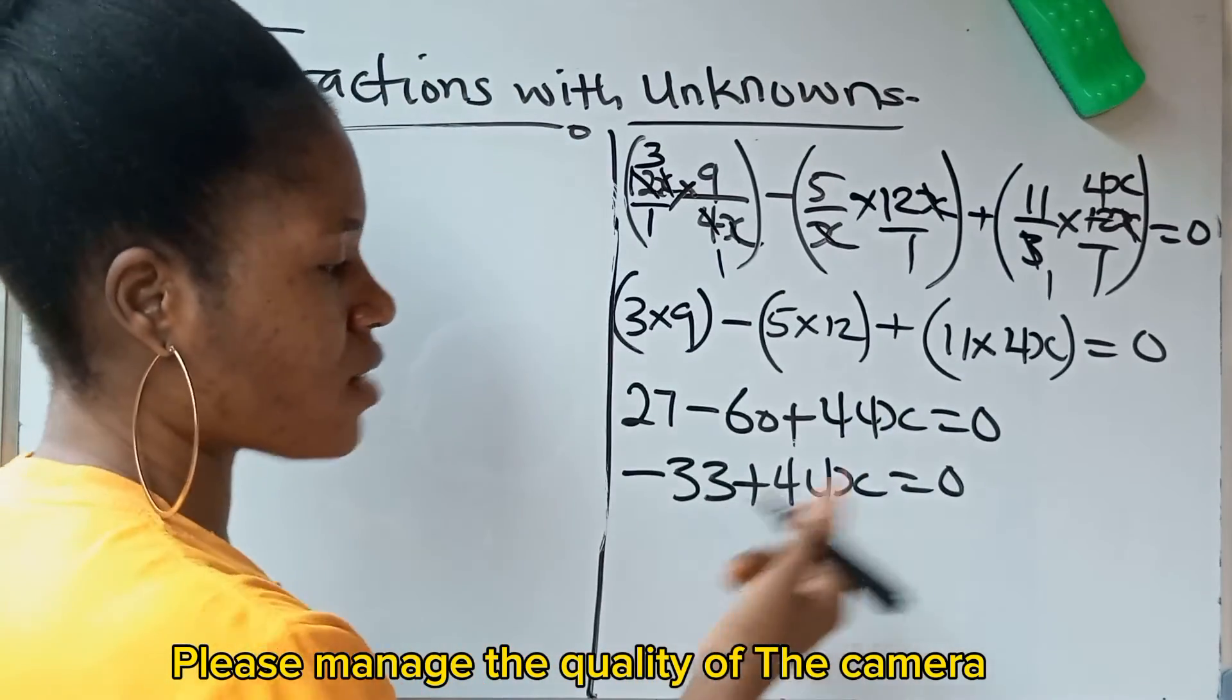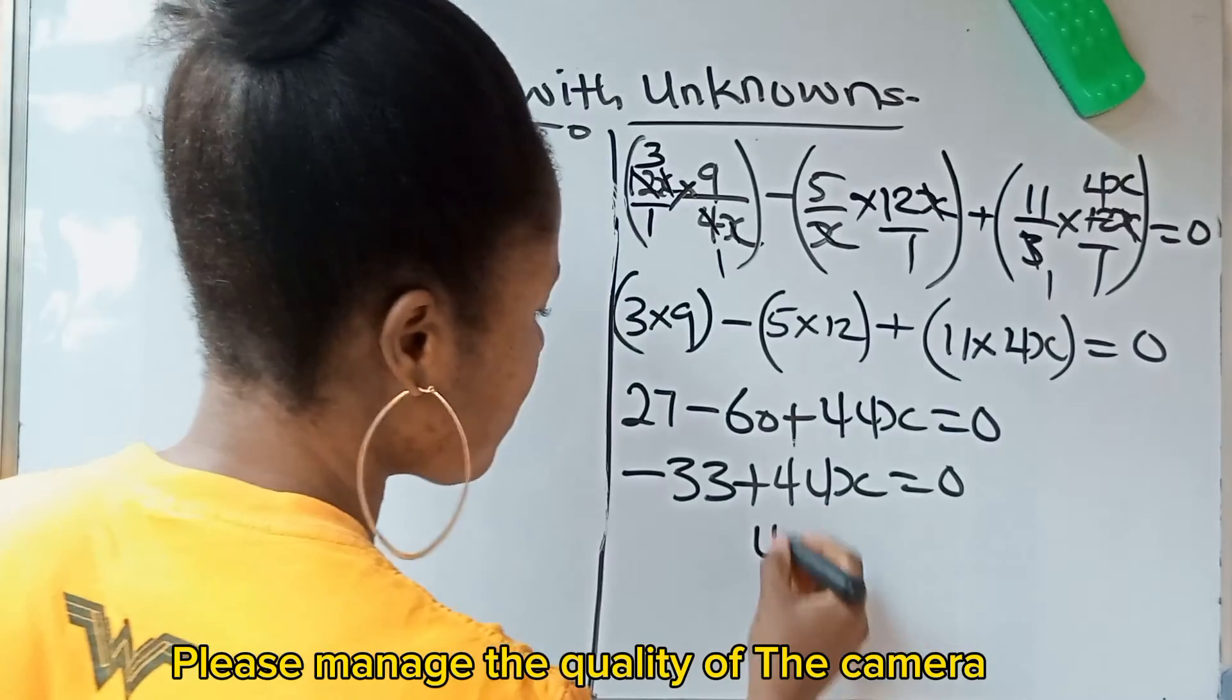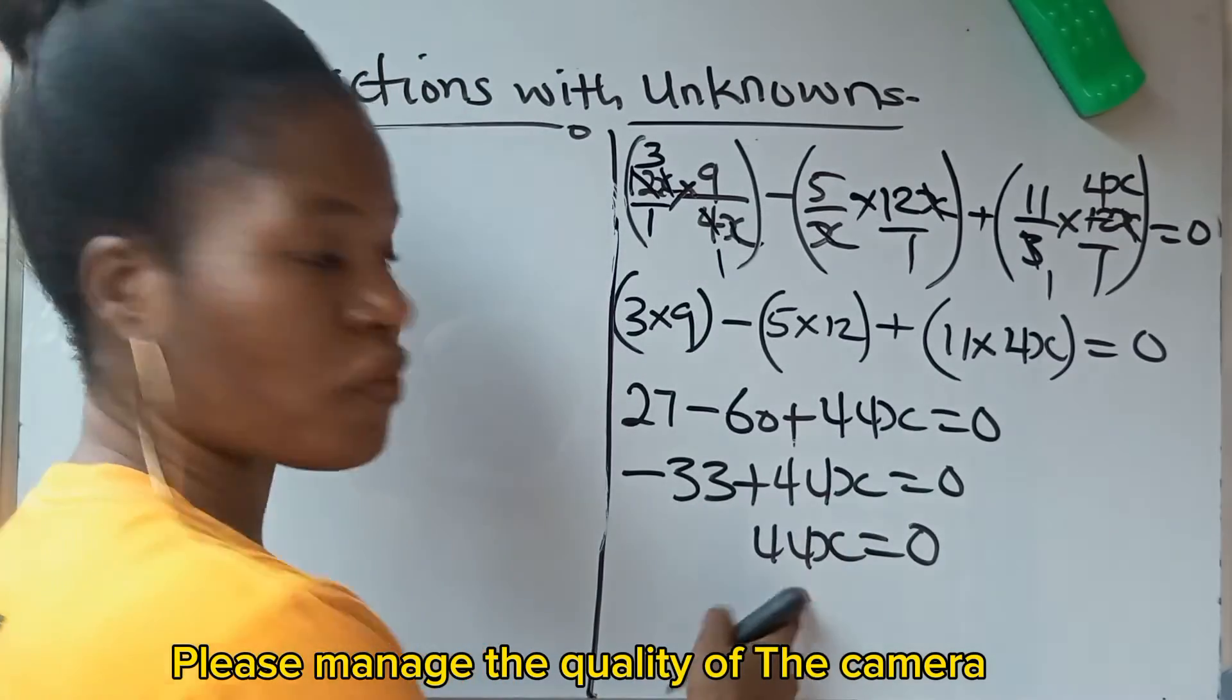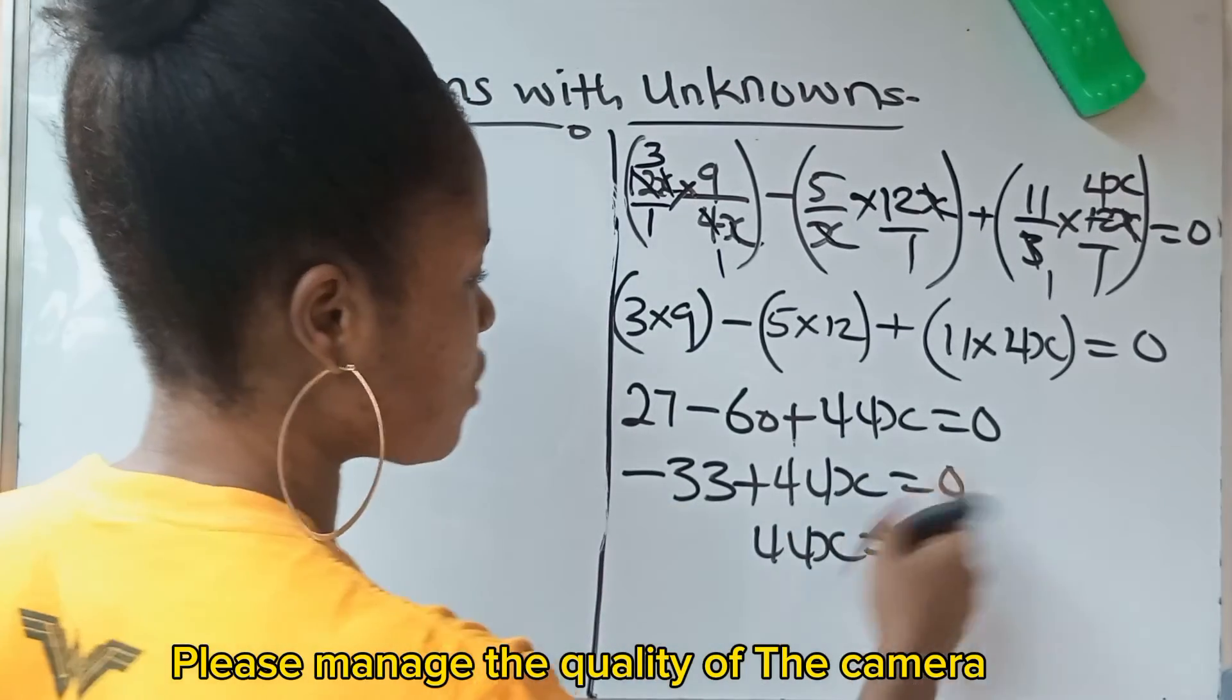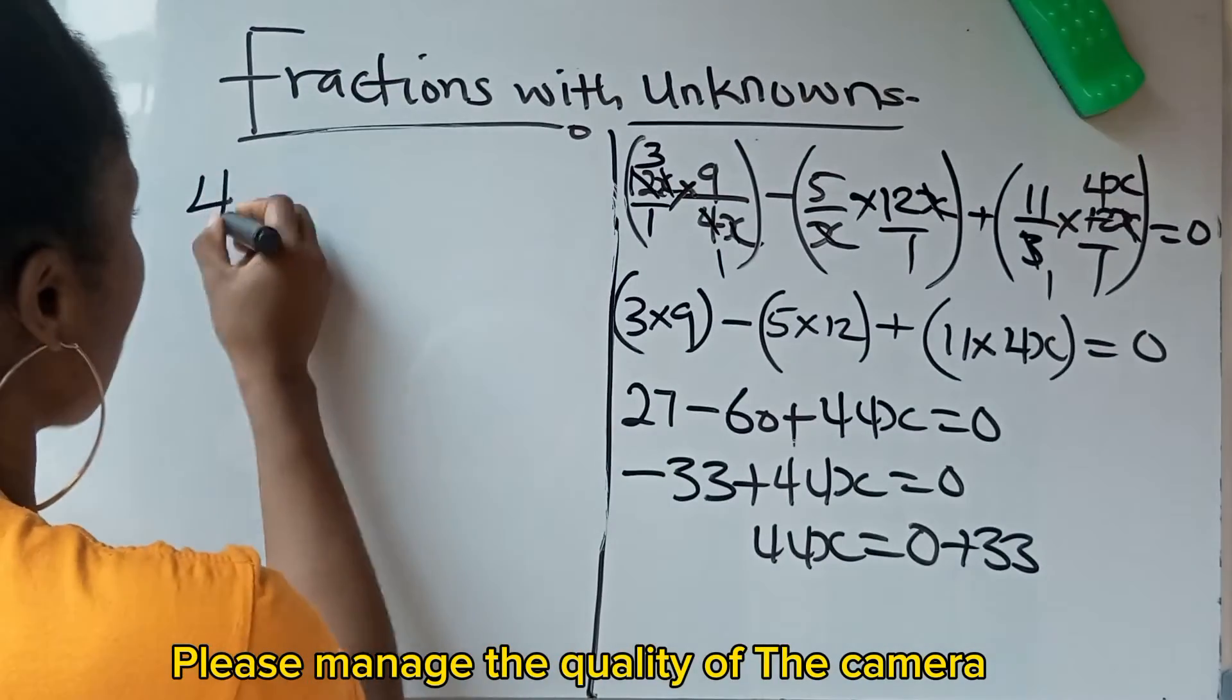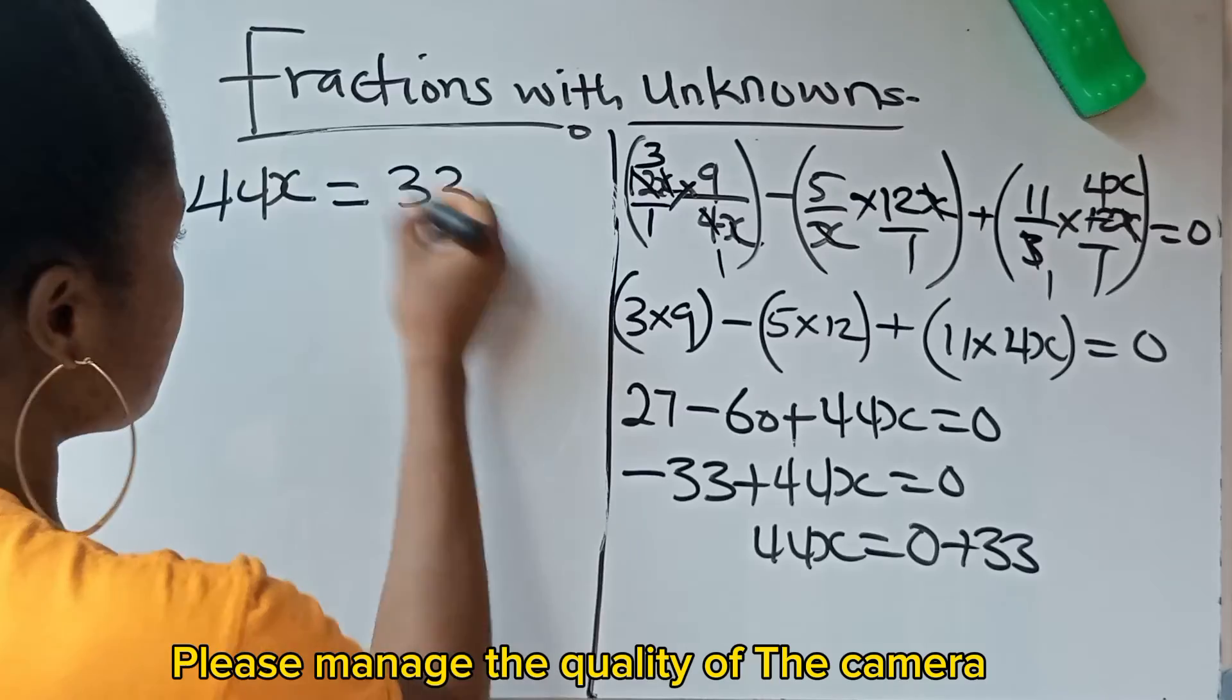I want this 44x to be on its own because I'm looking for x. So if I write 44x equals 0, this minus 33 needs to leave here so that this 44x will be on its own. So this minus 33 will cross this equation sign to become plus 33. The sign is going to change. So you are going to have 44x is equal to 0 plus 33, which gives us 33.